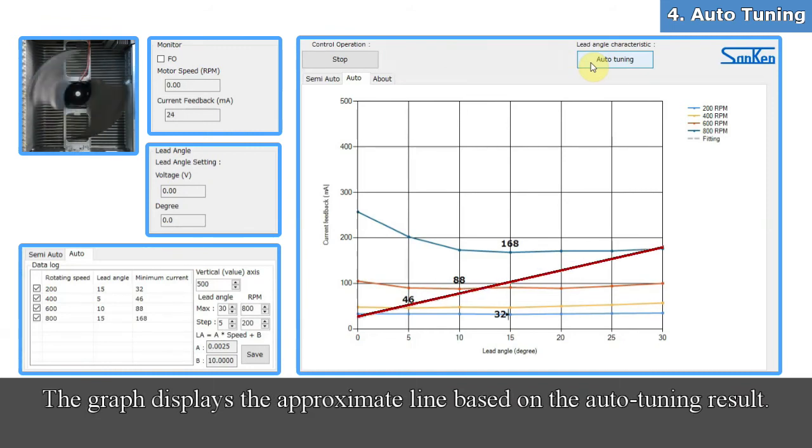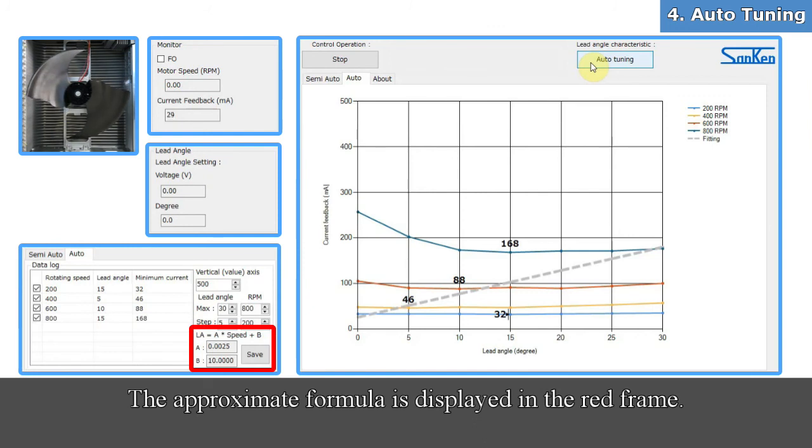The graph displays the approximate line based on the auto-tuning result. The approximate formula is displayed in the red frame.